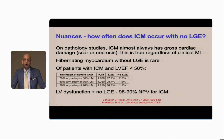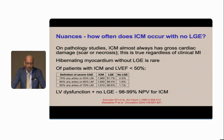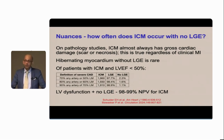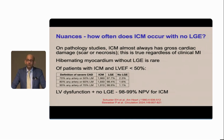A few nuances: how often does ischemic cardiomyopathy occur with no LGE? This often comes up when CMR physicians discuss using CMR. On pathology studies, ischemic cardiomyopathy almost always has gross cardiac damage in the form of scar or necrosis, regardless of whether there is a clinical history of MI. Hibernating myocardium without any LGE is extremely rare. In our study, among patients with ischemic cardiomyopathy and EF less than 50%, the prevalence of no LGE was only 1.1 to 2.3%, depending on the definition of severe CAD sufficient to cause hibernating myocardium.